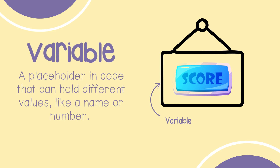For example, if you have a variable called score, it can hold different numbers as you play a game. At the beginning, score might be zero, but each time you win points, the number in the score box changes. So variables help programs keep track of important information that can change while the program runs.